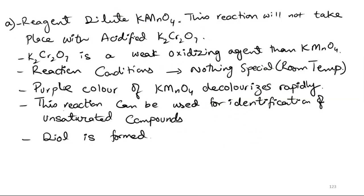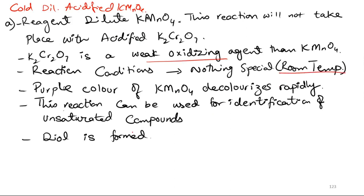This is the dilute acidified KMnO4 reaction. The reagent is dilute KMnO4. This reaction will not take place with acidified K2Cr2O7 because it is a weaker oxidizing agent than KMnO4. The reaction condition is room temperature. The characteristic color of KMnO4 decolorizes rapidly. This reaction can be used for identification of unsaturated compounds, and its product is a diol.